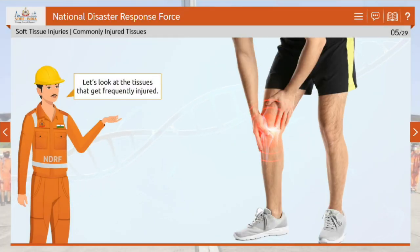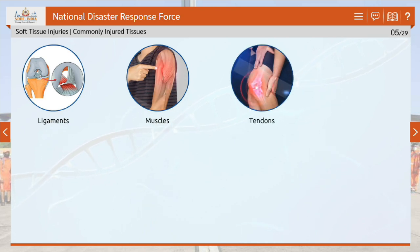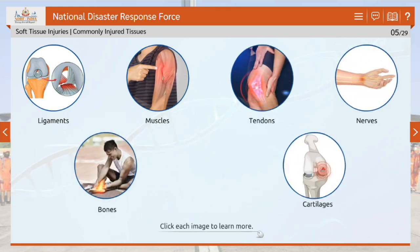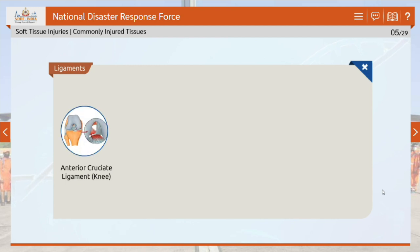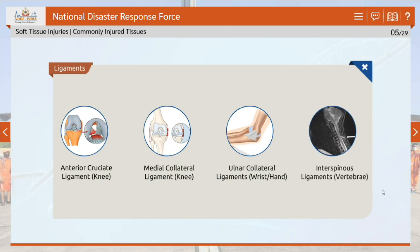Let's look at the tissues that get frequently injured. These tissues are ligaments, muscles, tendons, nerves, bones and cartilages. The commonly injured ligaments include the anterior cruciate ligament and medial collateral ligament in the knee, ulnar collateral ligaments in the wrist or hand, and interspinous ligaments in the vertebrae.